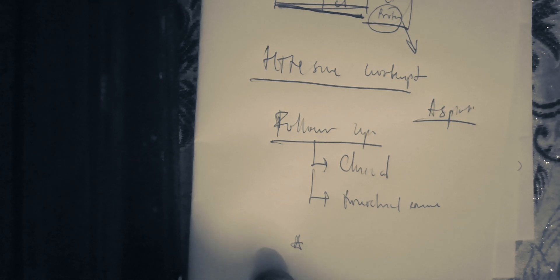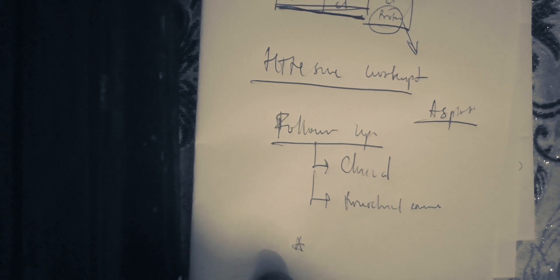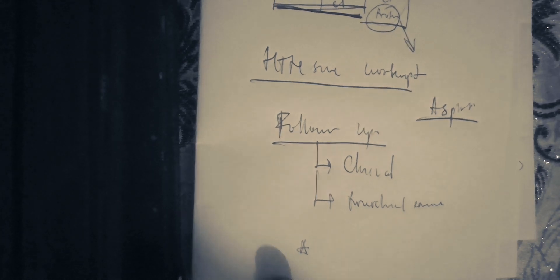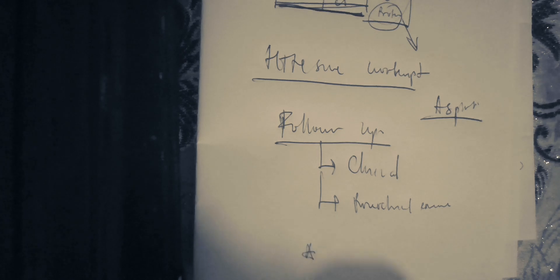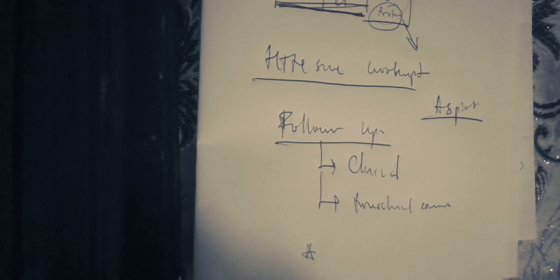The mechanism by which aspirin reduces preeclampsia relates to thromboxane — one of the major causes in the pathway. Low-dose aspirin is an anti-platelet agent, so it produces a reduction in platelet aggregation, which results in a reduction of thromboxane production. A reduction in thromboxane production leads to less vasoconstriction, which can result in a reduction in preeclampsia.